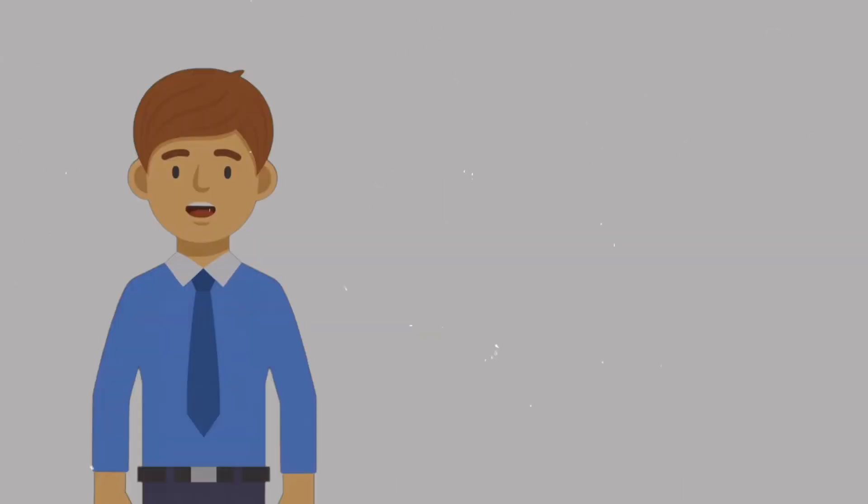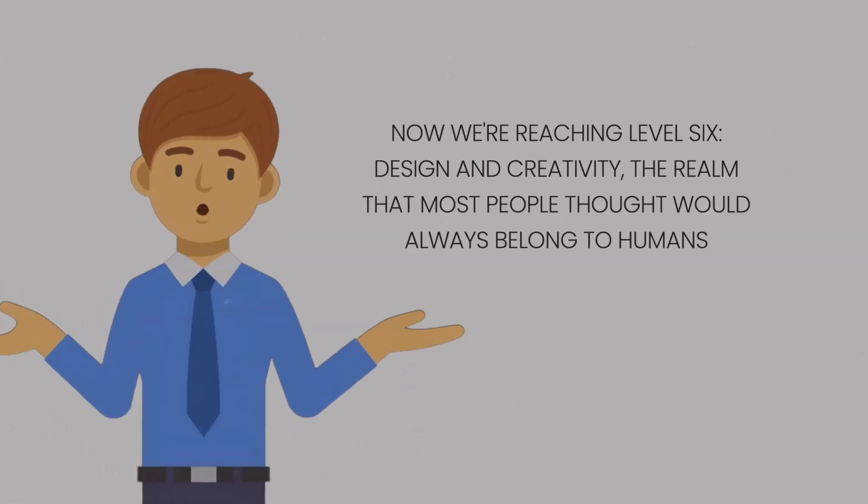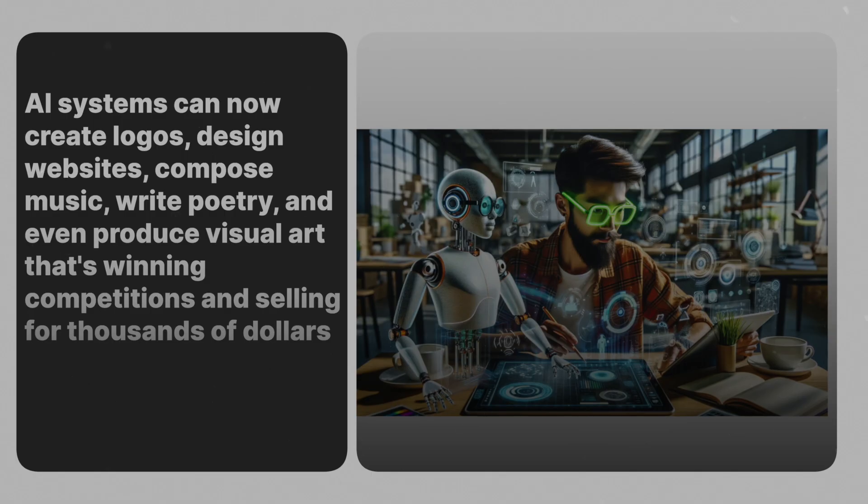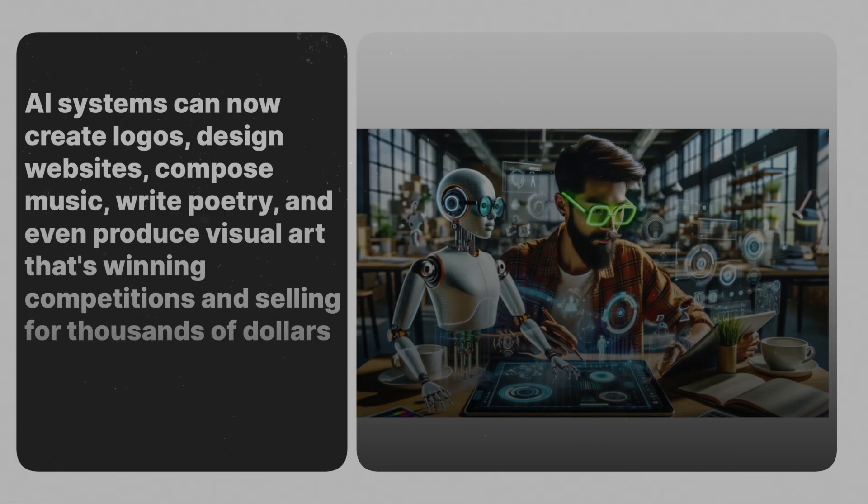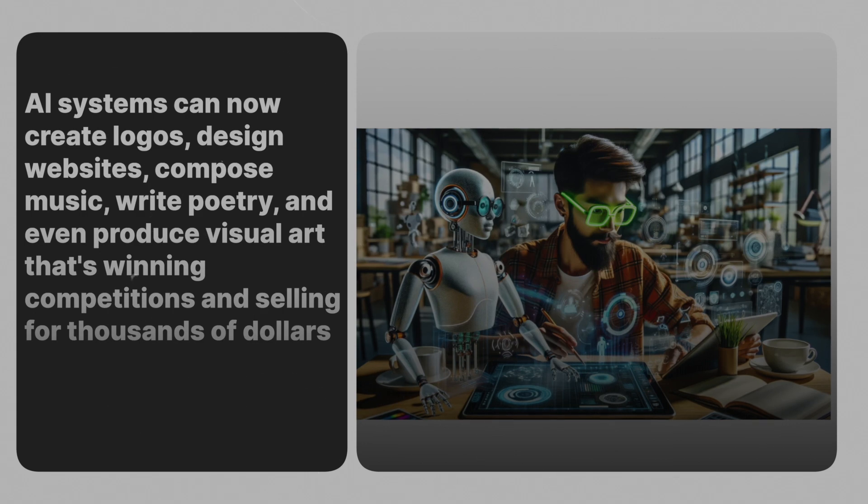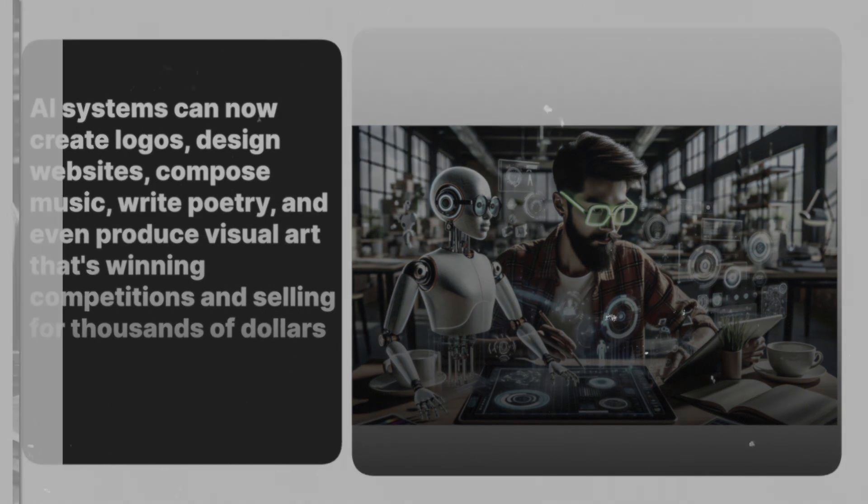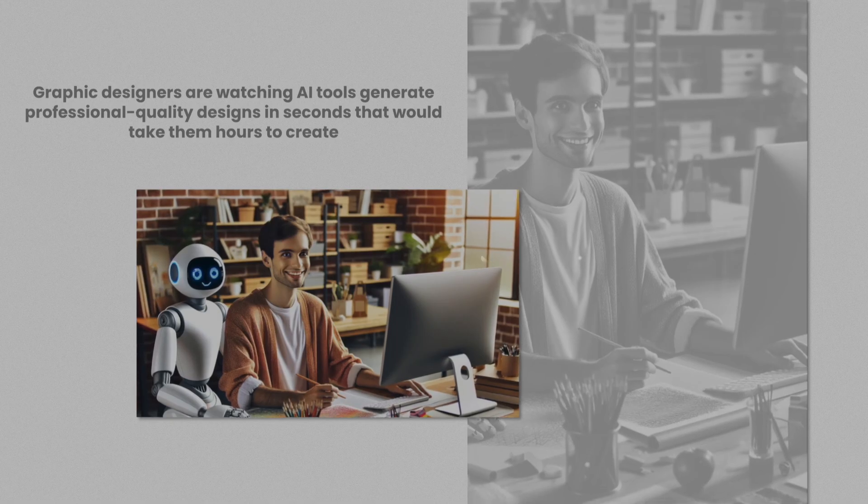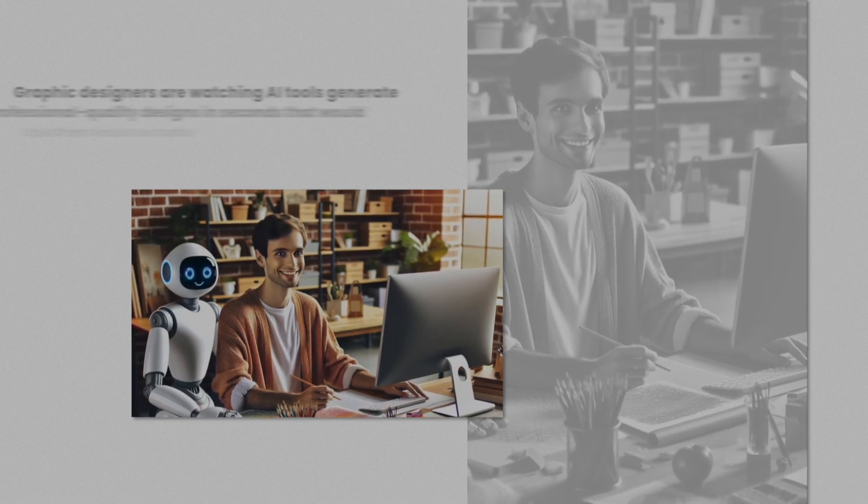Design and creativity. Now we're reaching level six: design and creativity, the realm that most people thought would always belong to humans. AI systems can now create logos, design websites, compose music, write poetry, and even produce visual art that's winning competitions and selling for thousands of dollars. Graphic designers are watching AI tools generate professional quality designs in seconds that would take them hours to create.